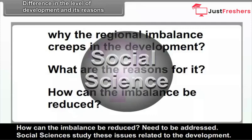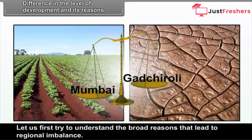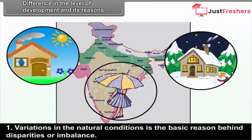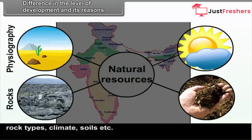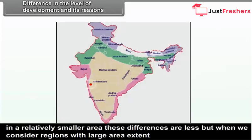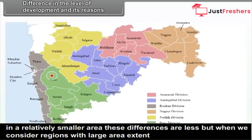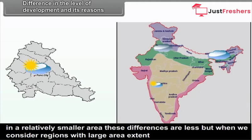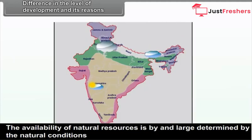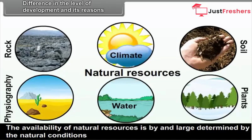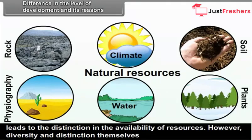Let us first try to understand the broad reasons that lead to regional imbalance. Variations in natural conditions are the basic reason behind disparities. There exists considerable difference in physical conditions of different regions in terms of physiography, rock types, climate, soils, etc. In a relatively smaller area, these differences are less. But when we consider regions with large area extent, differences in natural conditions become prominent. The availability of natural resources is largely determined by the natural conditions, leading to distinction in the availability of resources.